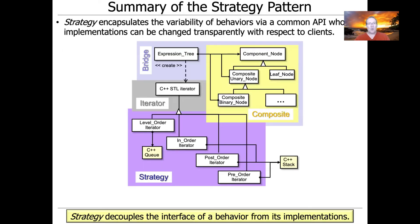To wrap up, we use strategy to encapsulate the variability of algorithms with respect to a common API, and allow those implementations to be changed transparently with respect to clients. The best example here is the use of strategy in the context of our iterators created by the iterator factory, implementing different traversal algorithms in an iterative model. We use strategy very effectively to decouple interfaces from their implementations and allow client code to remain blissfully unaware as those implementation strategies change.